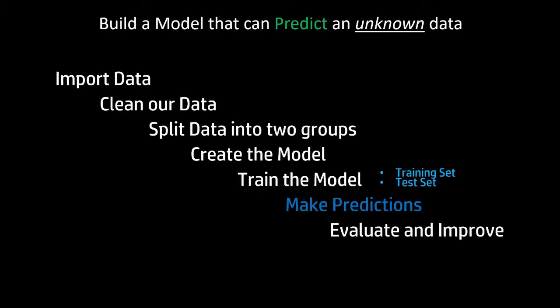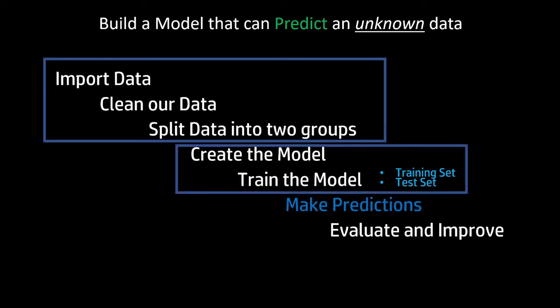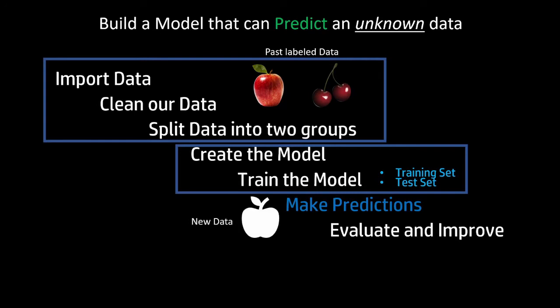I want to do a little bit of a review and see where SVMs fit in this whole process. When we have unknown data and we're looking at it and we don't understand what it is, we can't really classify it — we use an SVM. In a typical fashion, what we do is import our data, clean it, split it into two groups, create the model, and train the model on past labeled data. Then we introduce a new bit of data and make that prediction to get the output.